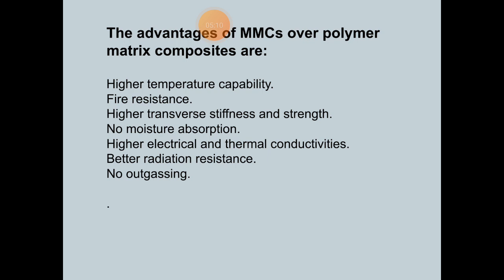The advantages of MMC over other matrix composites include: higher strength-to-weight ratio compared to metals; good dimensional stability compared to metals; fire resistance; no moisture absorption; high transverse strength and improved fatigue characteristics compared to metals; high thermal conductivity compared to polymer matrix composites (PMC); better transverse properties compared to PMC; improved joining characteristics compared to PMC; resistance to radiation such as lasers, ultraviolet, and nuclear; and very low contamination compared to PMC.